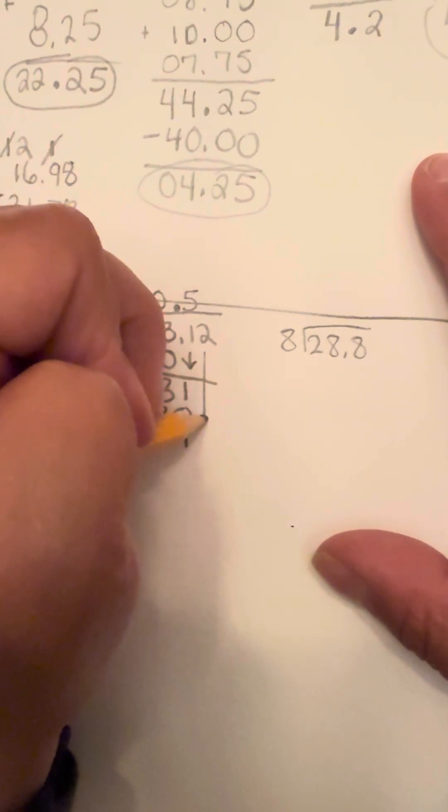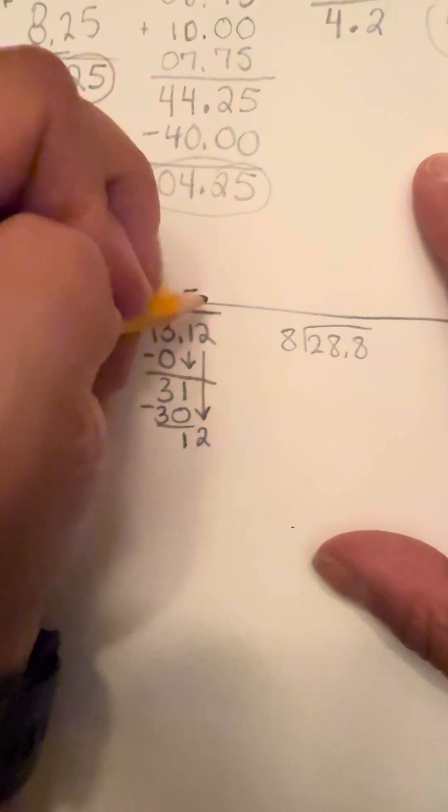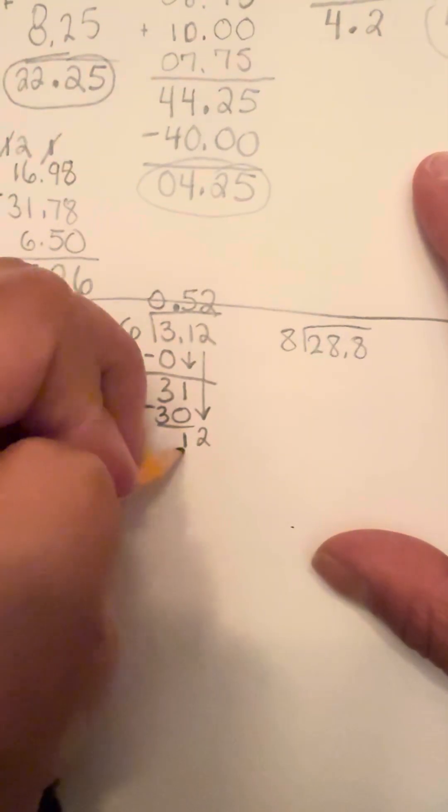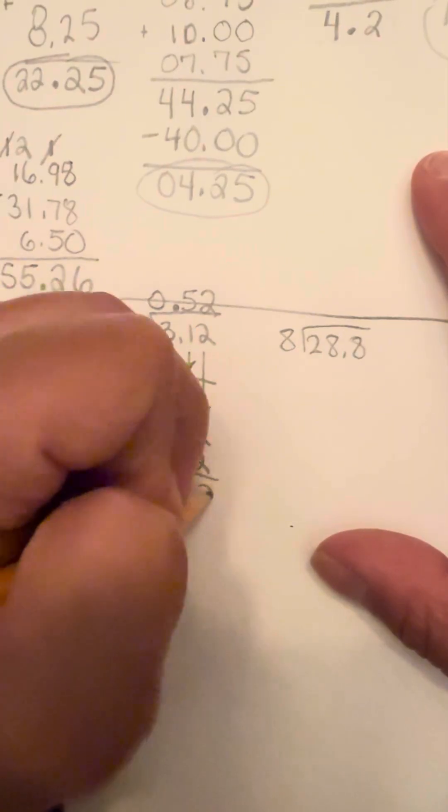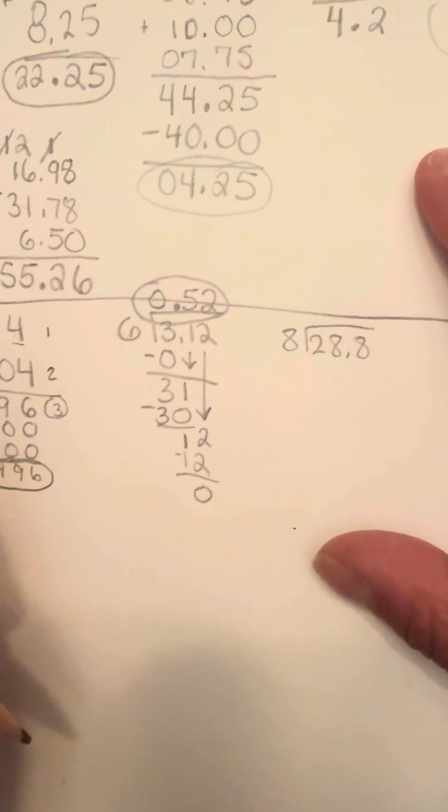So we're going to subtract 30 from 31, and that's going to leave me with one. And then I'm going to bring that two down. And now I'm going to assess six times what would give me 12. And the answer would be two. So then I have a nice zero remainder here. So my finalized answer would be 0.52.